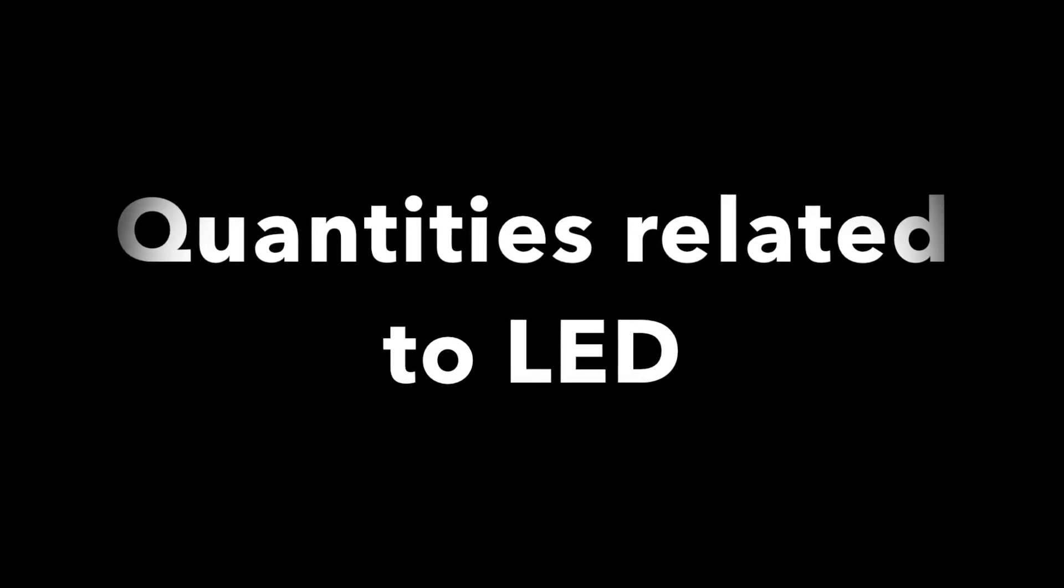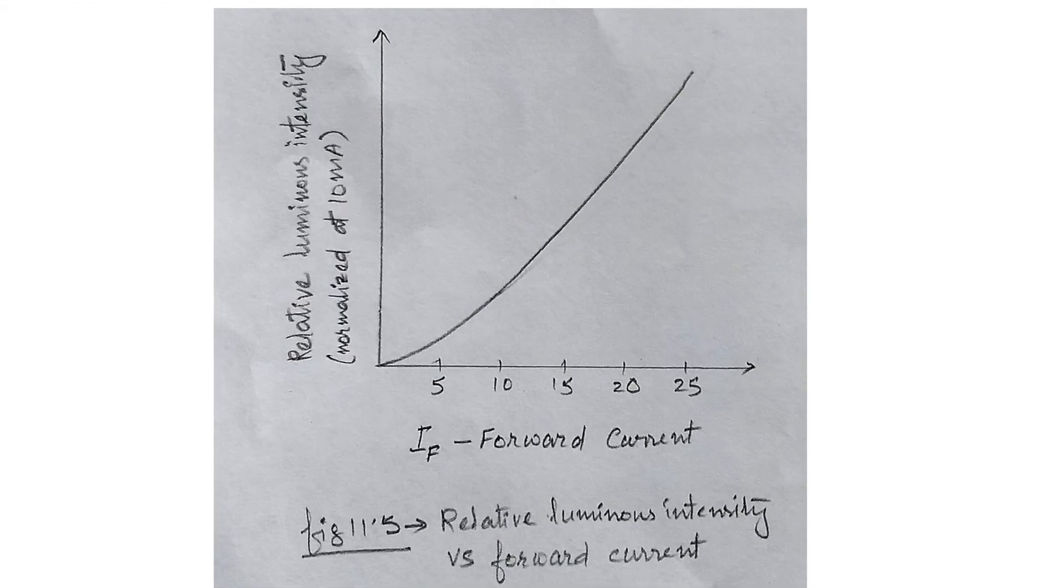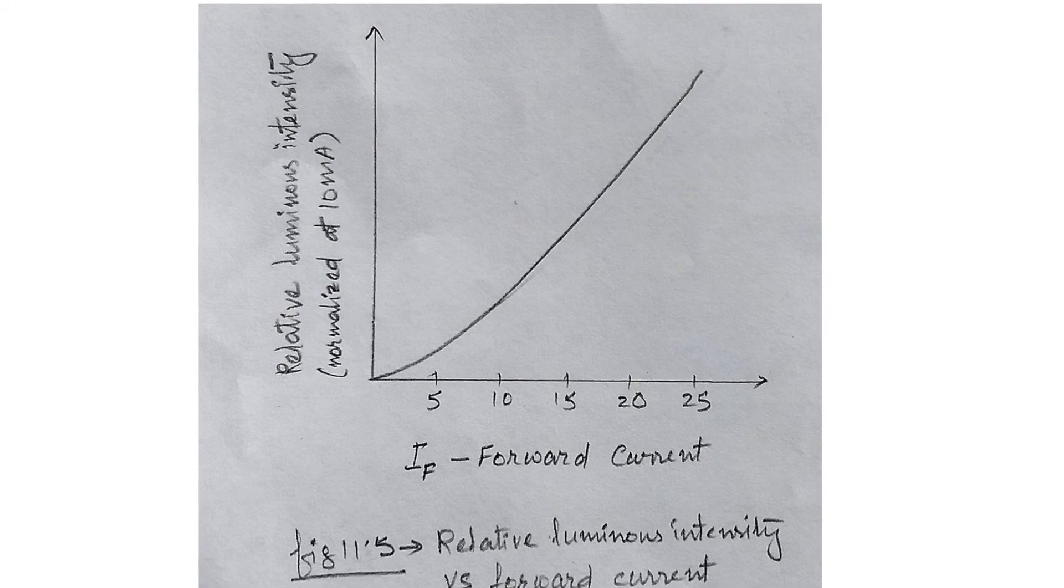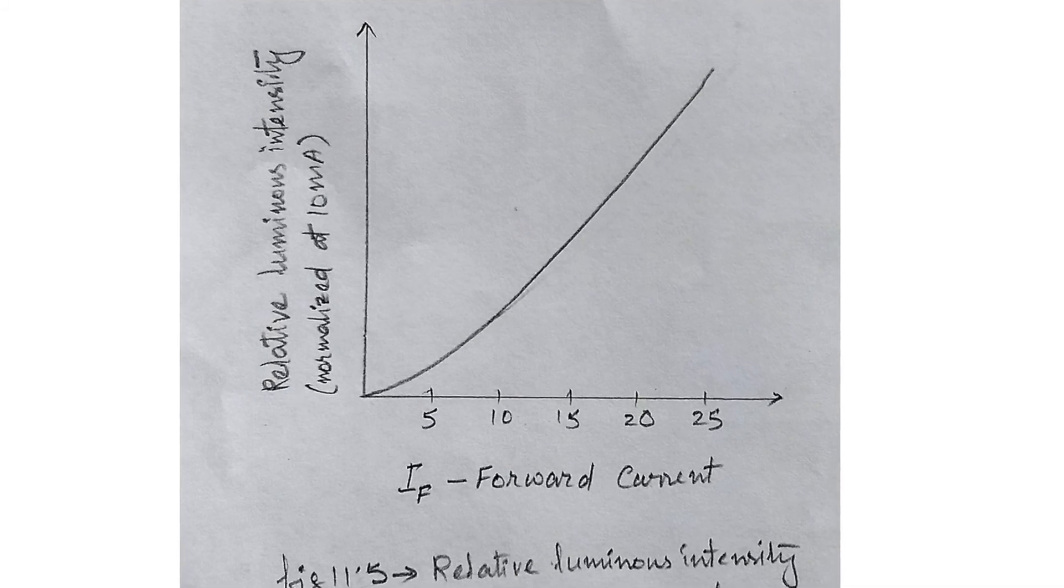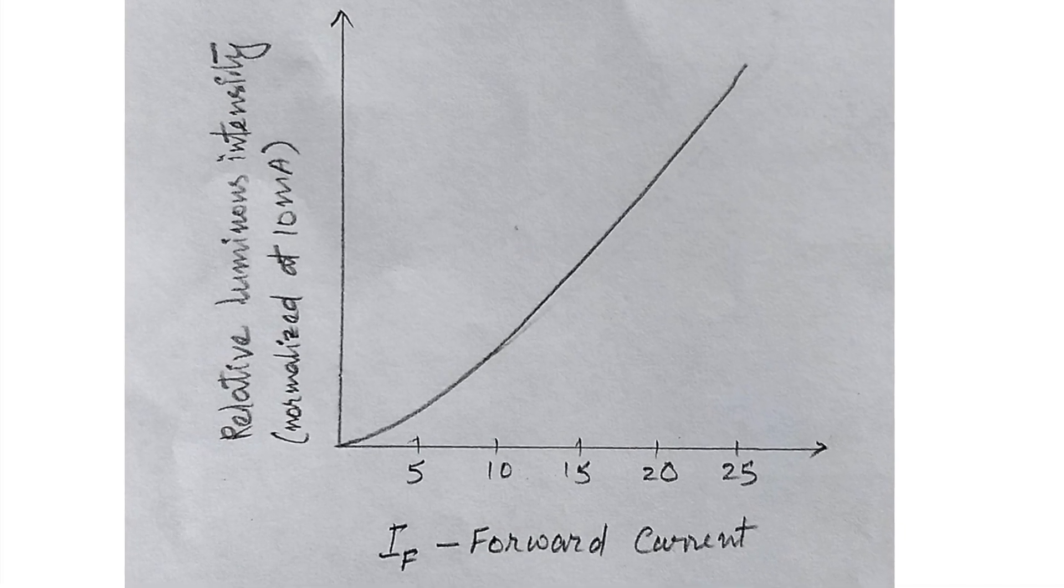Let us define two quantities under the heading electrical or optical characteristics at temperature 25 degrees Celsius. They are the axial luminous intensity and the luminous efficacy. Light intensity is measured in candela.